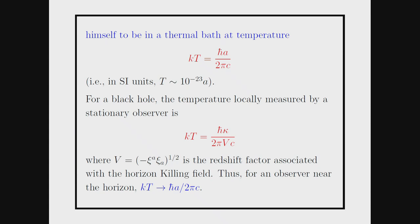For stationary observers just outside the black hole, the black hole has nothing particularly to do with the radiation they see. However, as you go out to infinity, the stationary observers become nearly inertial and will still see a non-zero radiation — but it's no longer given by the acceleration formula.